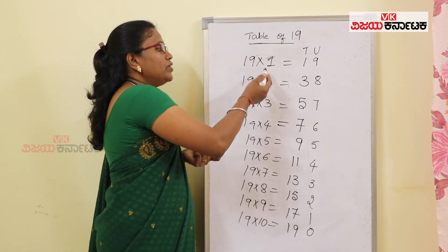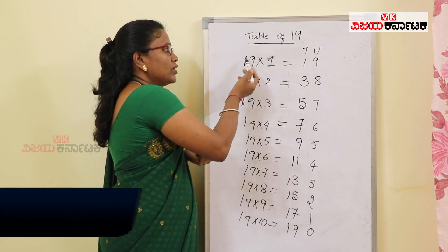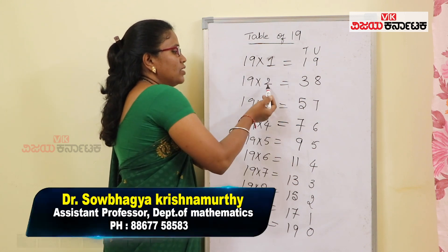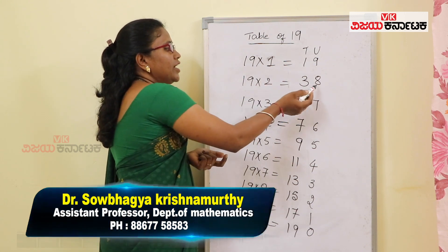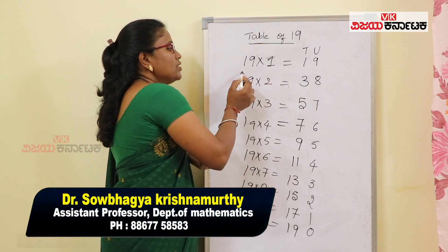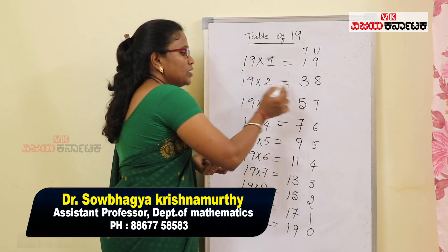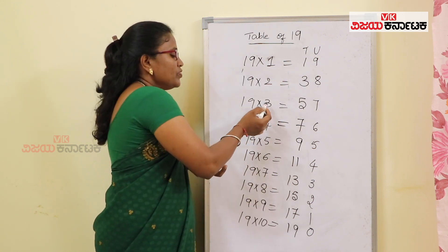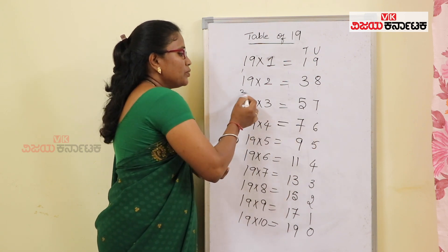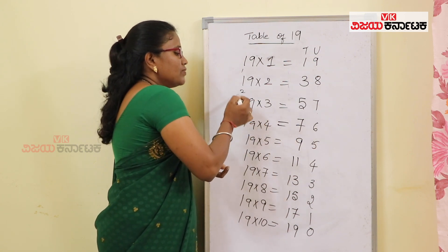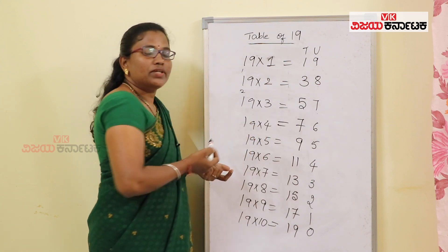So 19×1: units place 9, tens place 1 — that gives 19. 19×2: write 8 in units place, carry 1, 1×2 is 2 plus 1 gives 3 — so 38. Then 19×3: 9s are 27, write 7, carry 2, 1×3 is 3 plus 2 gives 5 — so 57.